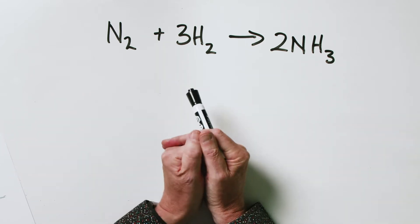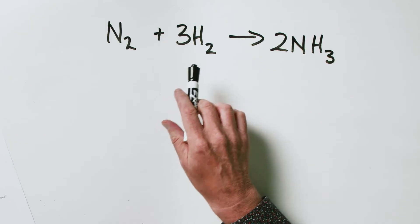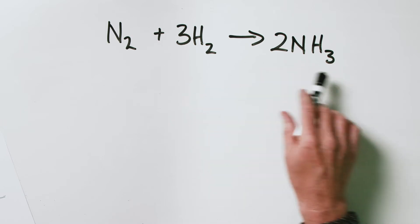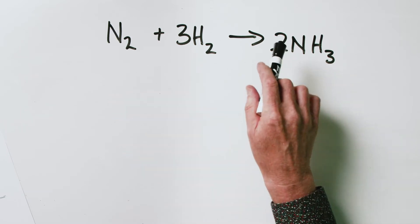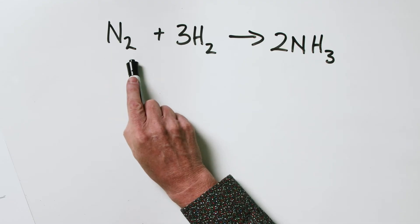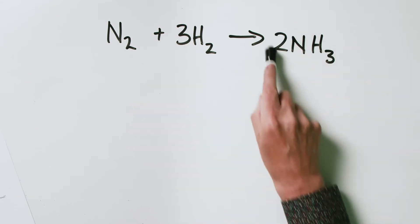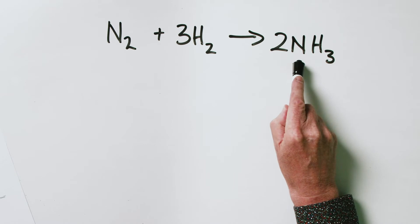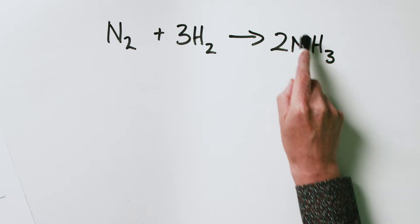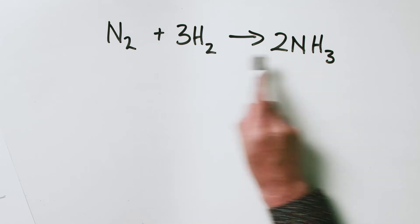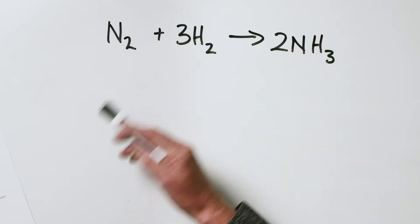This is an example of a balanced chemical equation. What do we mean by balanced? We mean that there are the same number of atoms of each type on both sides of the arrow. We've got a nitrogen molecule made up of two nitrogen atoms on the left; on the right we've got two ammonia molecules, each containing one nitrogen atom — a total of two nitrogen atoms on each side. Balanced.